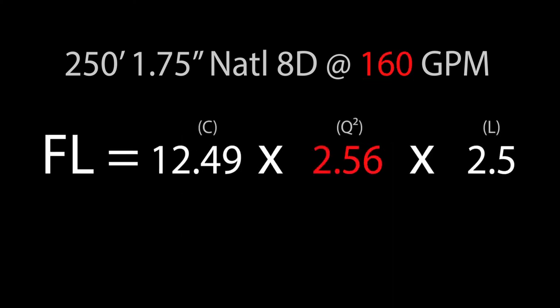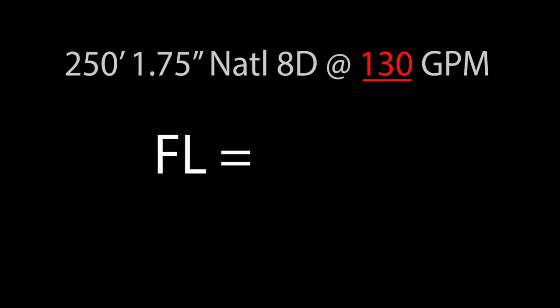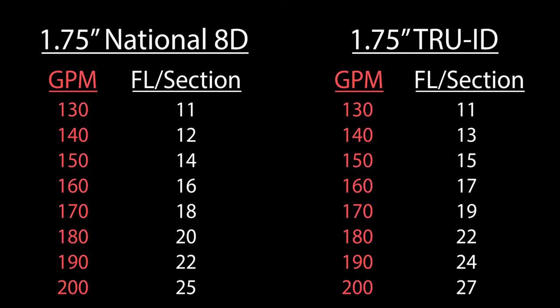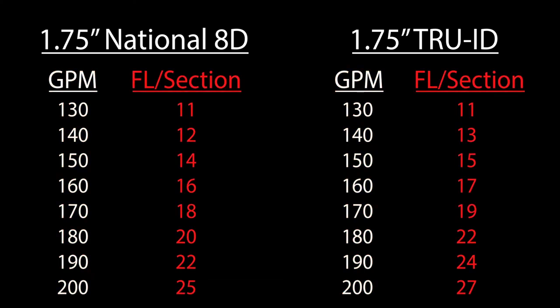Conversely, if we lower our volume to only 130 GPM, the friction loss drops to a meager 52 PSI, or only 10 PSI per section. As you can see, as the volume is increased or decreased, the friction loss per hose section will also increase or decrease.